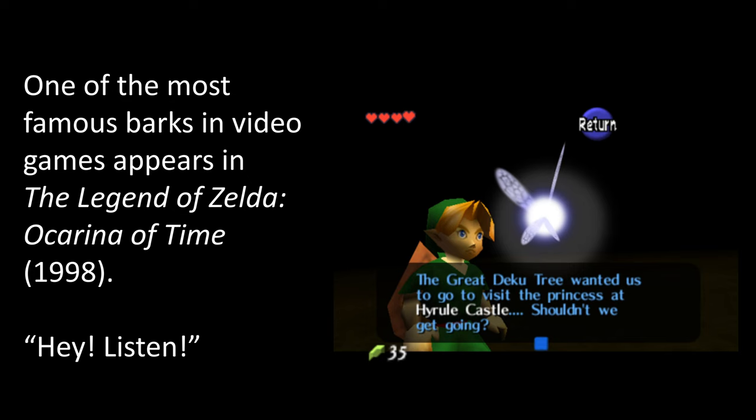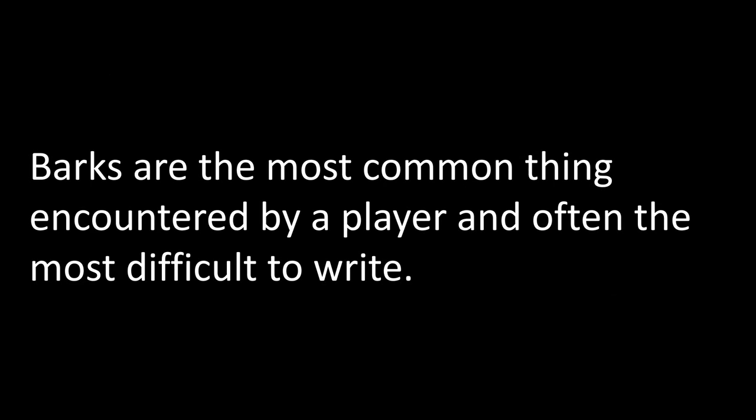They're also communication between Navi and Link. Barks are the most common thing encountered by a player, and often the most difficult to write. When we're having communication between two different characters or writing dialogue for them, we can often set it within a scene and give them some context. But when it comes to barks, they can be a little more complicated, because they're not always time sensitive or tied to a particular setting or scene.